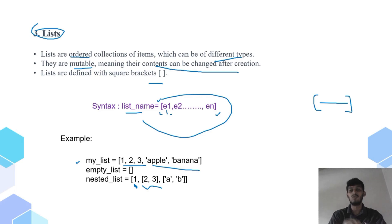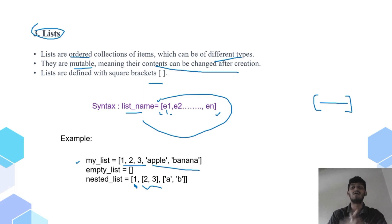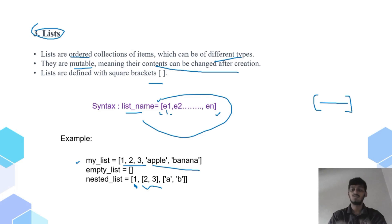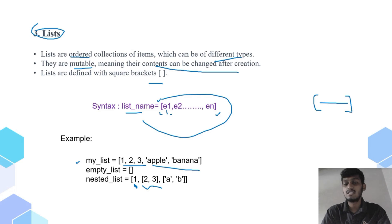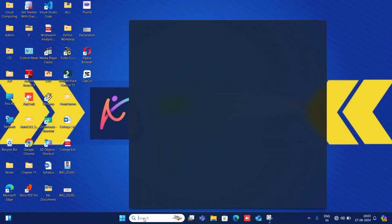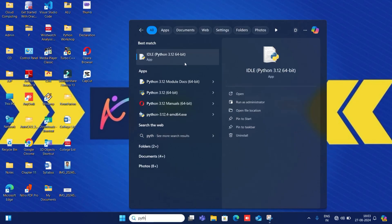So what is a list? A list is a collection of elements or items which are ordered and mutable. Mutable means they can be changed once they are created. They are declared using square brackets. That is the syntax. Now let's see a list on screen — let's open Python, search Python, and open IDLE.